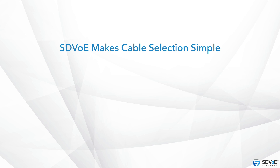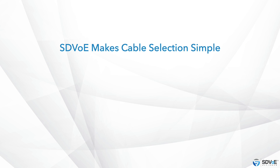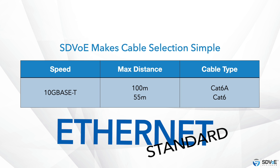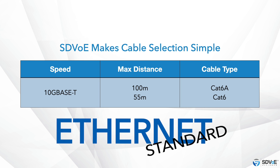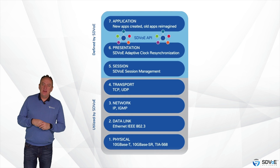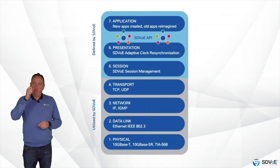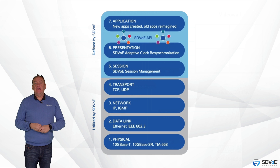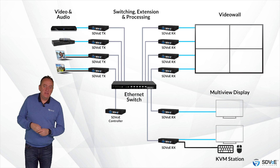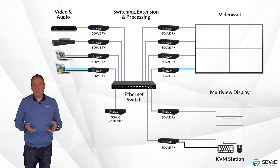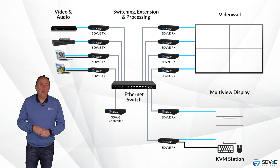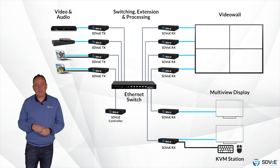SDVoE makes your cable selection simple because it uses the Ethernet standard. And because SDVoE uses Ethernet and not a proprietary data link layer, it can very easily be added to an existing Ethernet network in the future, should either the source or the display need to be incorporated into a larger distribution system.